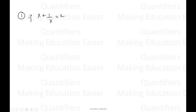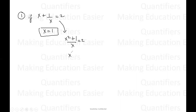If X plus one by X is equal to two, then X will be equal to one. Now let us see the proof. If I simplify this equation, it can be written as X squared plus one, whole divided by X, is equal to two, which can be further written as X squared minus two times X plus one is equal to zero. Here we can say X minus one, whole squared equals zero, and we get X is equal to one.